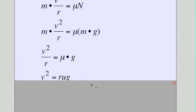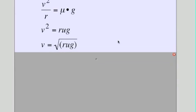And then, again, we're going to try to solve for velocity. And I love this one because it's the square root of rug. In this problem where there's friction providing the circular motion, the derived equation for velocity maximum is equal to square root of rug, v = √(rμg).